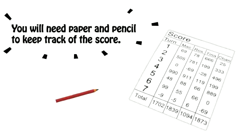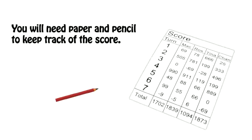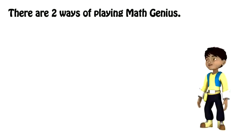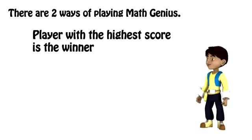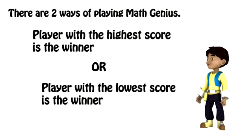You will need paper and pencil to keep track of the score. There are two ways of playing. Player with the highest score is the winner, or player with the lowest score is the winner.